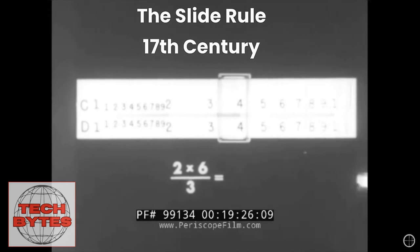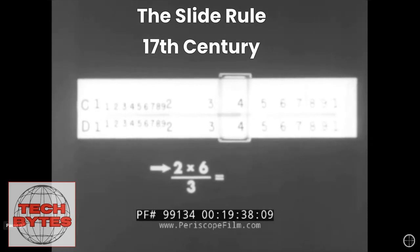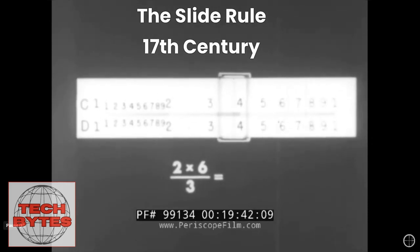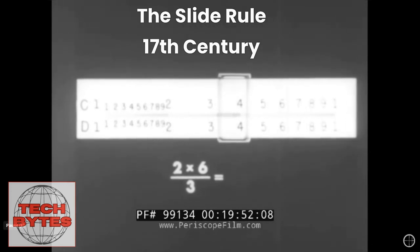Another early computing device that was widely used for over 300 years is the slide rule. Developed in the 17th century, it is essentially a ruler with logarithmic scales that can be aligned to perform multiplication, division, and other mathematical operations.